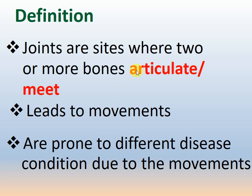It is better to use the word 'articulate' rather than 'meet' because two bones don't meet — they articulate. There is an articulating surface in between two bones, and that is where we name the joint. Joints lead to movement; without joints we can't move. We discussed different kinds of movement such as flexion, extension, and circumduction — all performed by joints, and joints are prone to different types of diseases due to movement.